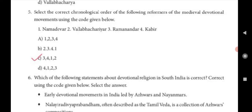Fifth question: Select the correct chronological order of the following reformers of the medieval devotional movements using the code given below. The reformers are Nama Devar, Vallabacharya, Ramananda, and Kabir. In chronological order: Ramananda, Kabir, Nama Devar, Vallabacharya. Answer C.